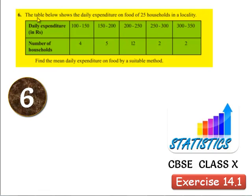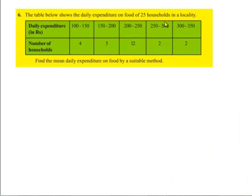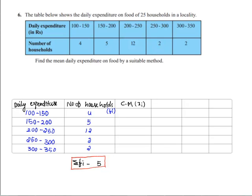The given problem: the table below shows the daily expenditure on food of 25 households in a locality. Daily expenditure is given in rupees as grouped data, and number of households is given in the form of frequencies. Find the mean daily expenditure on food. Here we move with the solution.